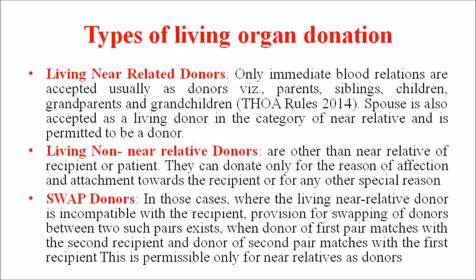The second type is the living non-relative donor, or other than near relative of the recipient or patient. They can donate only for the reason of affection and attachment toward the recipient or for any other special reason. The third one is the swap donor. In cases where the living near-relative donor is incompatible with the recipient, provision for swapping of donors between two such pairs exists — when the donor of the first pair matches with the second recipient and the donor of the second pair matches with the first recipient. This is permissible only for near relatives as donors.